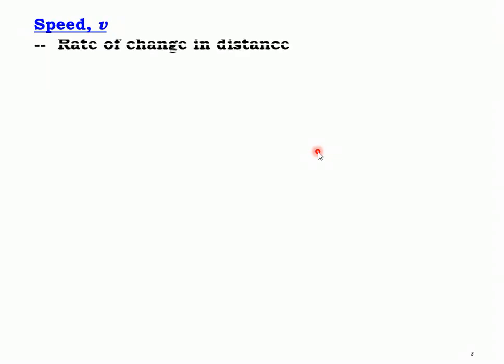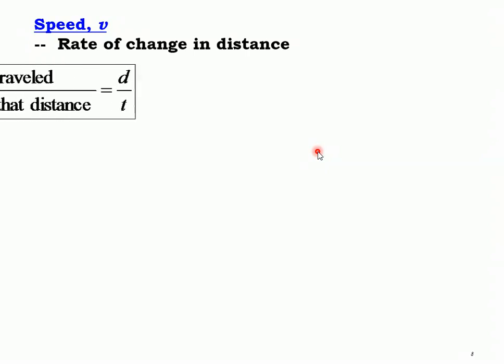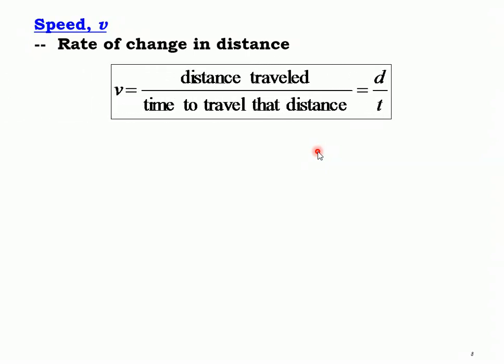Speed is defined as the rate of change of distance. The formula is V equals distance traveled over time of travel, or D over T. It is a scalar quantity, and the SI unit is meter per second.